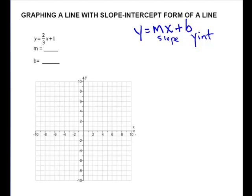On our first example, our m is 2 thirds because y is already isolated. Our y-intercept is 1 or 0, 1 if you're writing the ordered pair. It will be 1 on the y-axis.